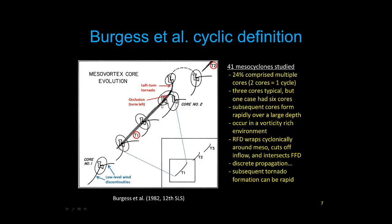That gray track is the tornado. Eventually, the storm continues to occlude, and the first mid-level mesocyclone turns left — you see that familiar left turn in the tornado track. Then there's discrete development of a new core to the right of the first mesocyclone. Because that new core is in a vorticity-rich environment, it goes on to produce a tornado fairly rapidly. Don Burgess and his co-authors looked at 41 mesos; about 25% were considered multiple cores. Typically they had three cores, but one case had six cores. Subsequent cores developed rapidly over a large depth of the atmosphere, and the RFD tends to wrap cyclonically around the meso, cutting off the inflow.